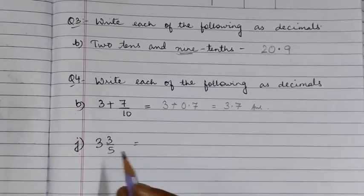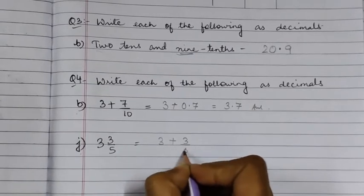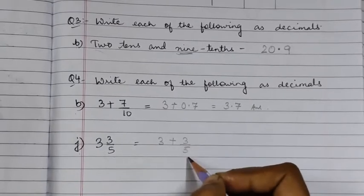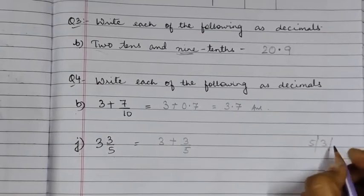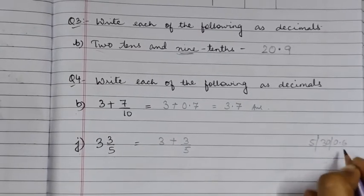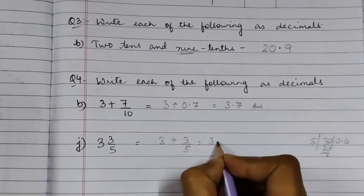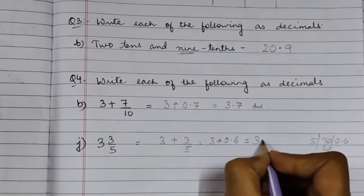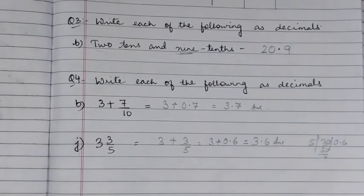For number (j) in Question 4, we have the mixed fraction 3 and 3/5. This can be written as 3 + 3/5. We convert 3/5 to decimal by dividing: 3 ÷ 5 = 0.6. So it becomes 3 + 0.6 = 3.6. This is the answer, and we do all questions of Question 4 in this way.